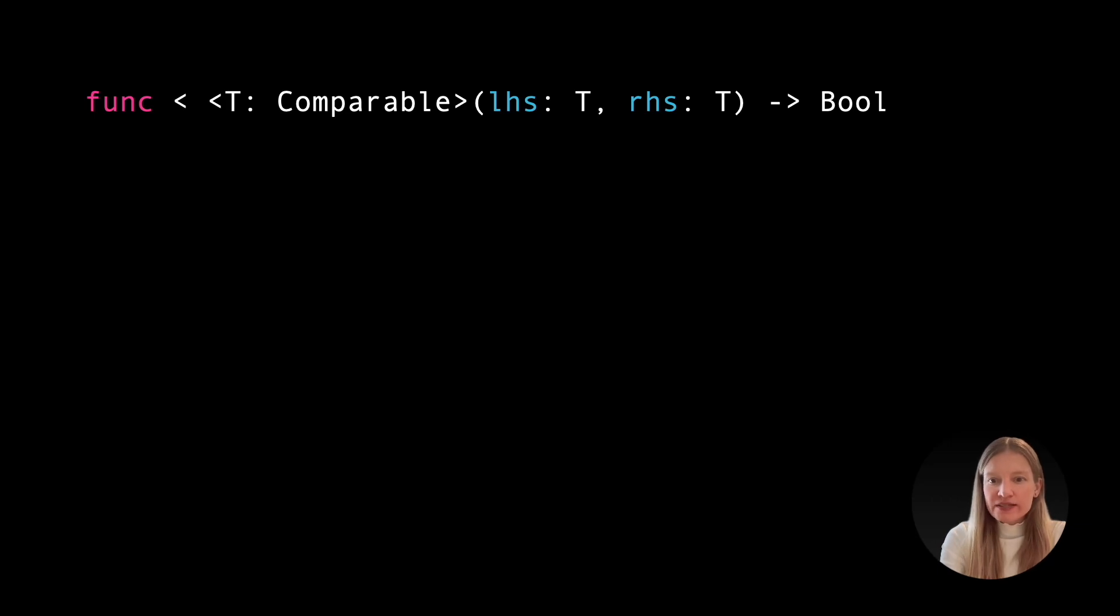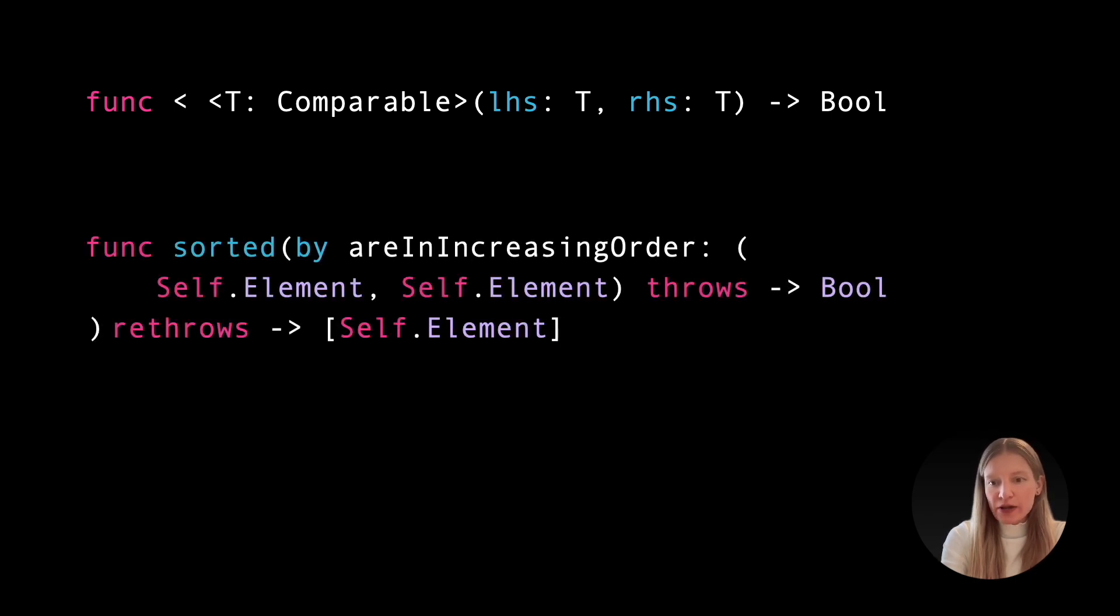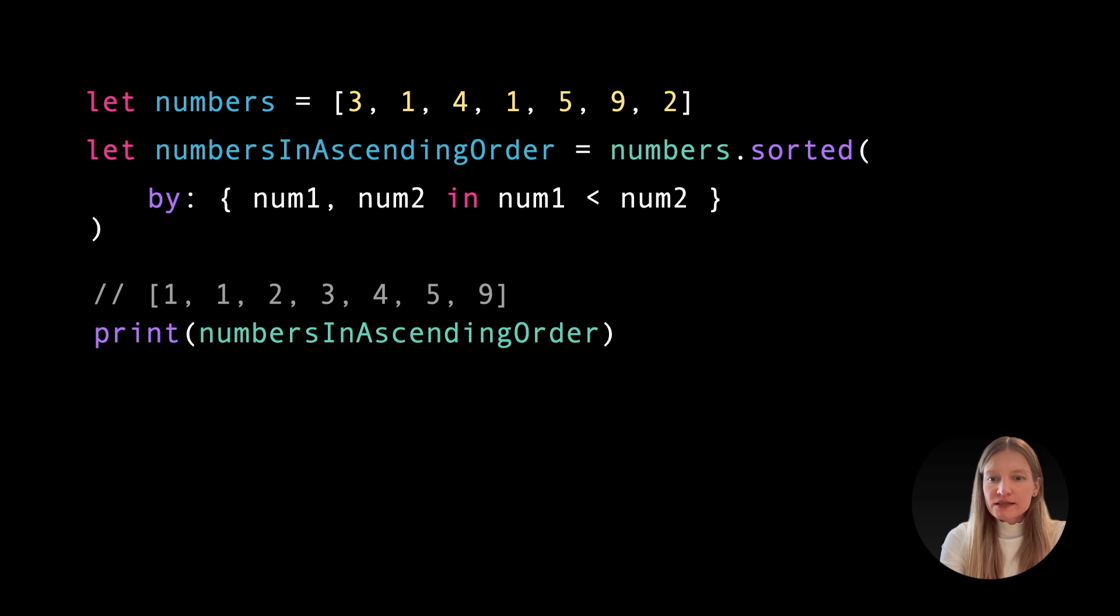In Swift, basic comparison operators such as less than and greater than are functions that take two parameters and return a boolean value. This function signature matches the closure type expected by the sorted(by:) method—two parameters of the element type and a boolean return value. Since Swift lets us pass functions as arguments where closures are expected, as long as their signatures match, we can simplify our code by passing the less than operator directly to sorted(by:). The updated code is much more concise, and its intent is immediately clear.